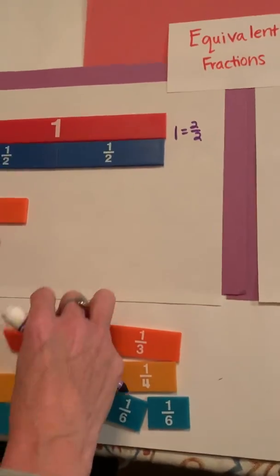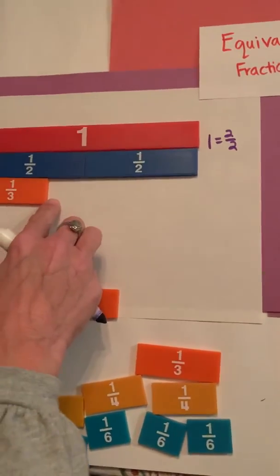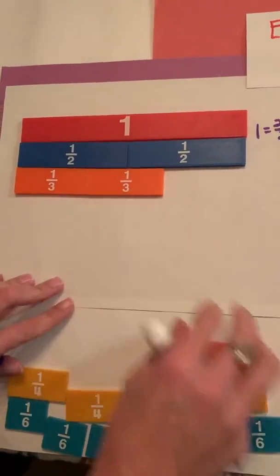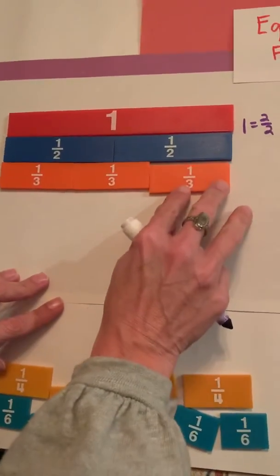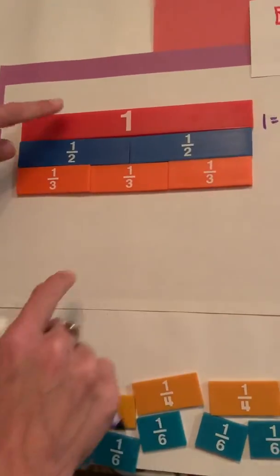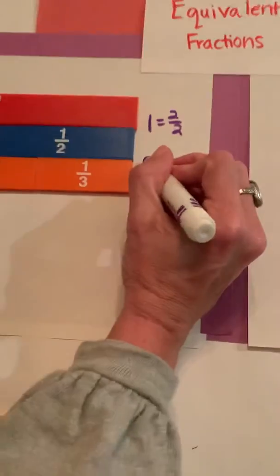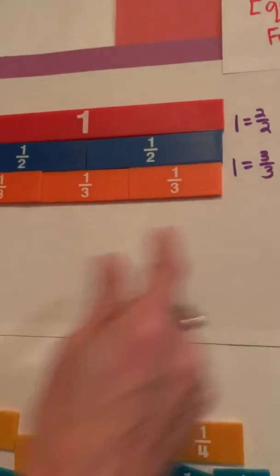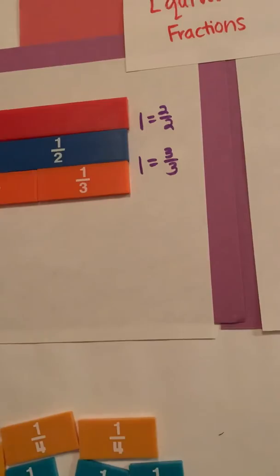So now I have my thirds. Once again, I want to make sure it's lined up at the same spot. I don't want to leave any gaps or anything. I want them touching. And then I can see that three thirds is also equal to one whole. So one is equal to three thirds, and three thirds is also equal to two halves.